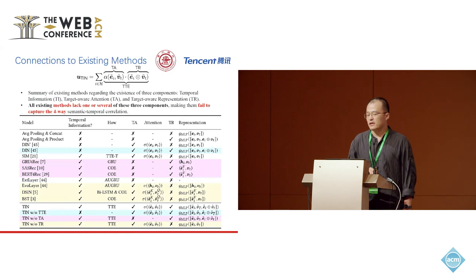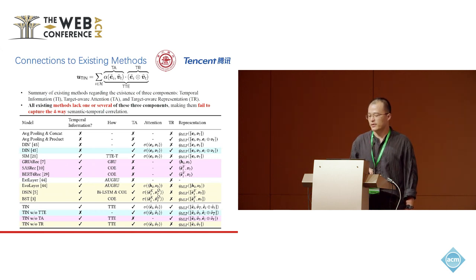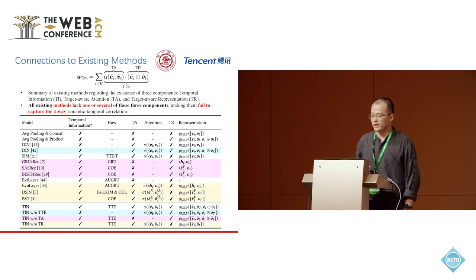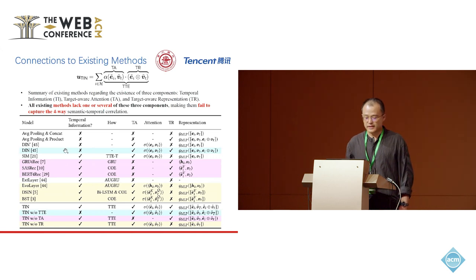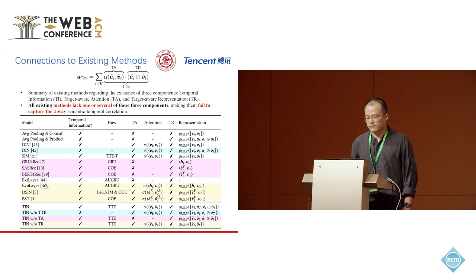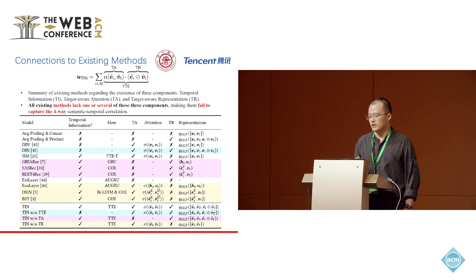We summarize existing methods regarding the existence of the three components in TRN: temporal information, target-aware attention, and target-aware representation. All existing methods lack one or several of these components, which makes them fail to capture the four-way semantic temporal correlation. For example, DIN has no temporal information. GRU4Rec, SASREC, and BERT4Rec lack target-aware attention because they use self-attention only on behaviors. DIN, DSIN, and BST lack target-aware representation because they use concatenation and MLP to model the interaction, and it has been proved that simple concat and MLP can't learn the dot product.